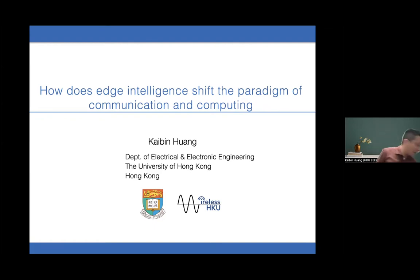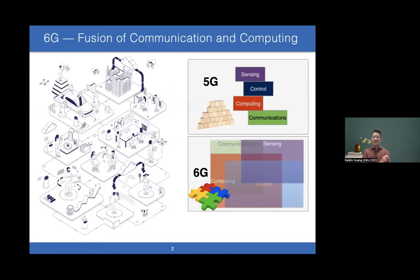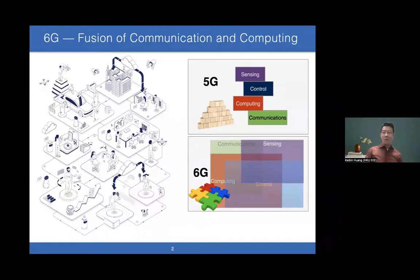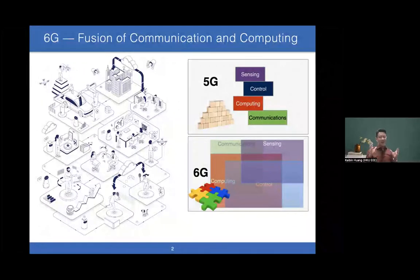Today I want to talk about edge intelligence and how it changes the paradigm of communication and computing. Some background first: 5G is mostly considered a communication network, but in 6G, researchers want to increase KPI by more than order magnitudes through integration of communication, sensing, computing, and control. So 6G is fundamentally different from 5G.